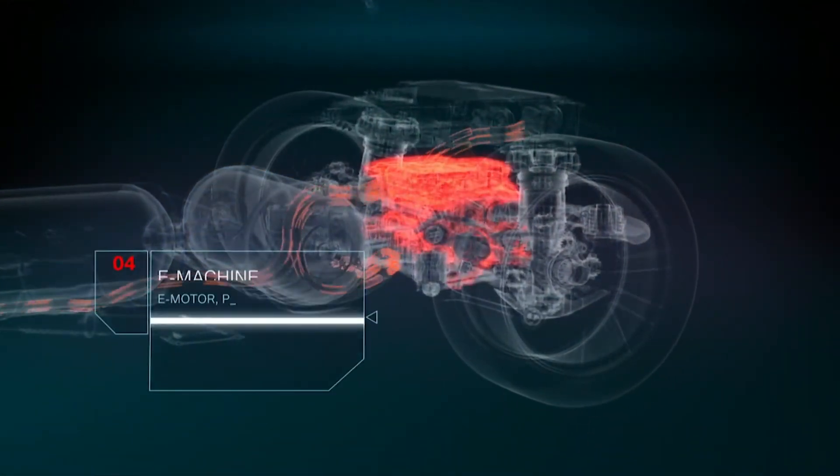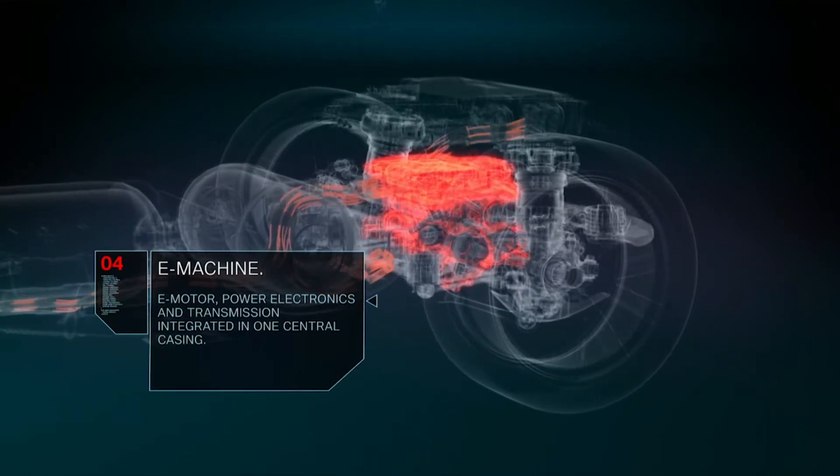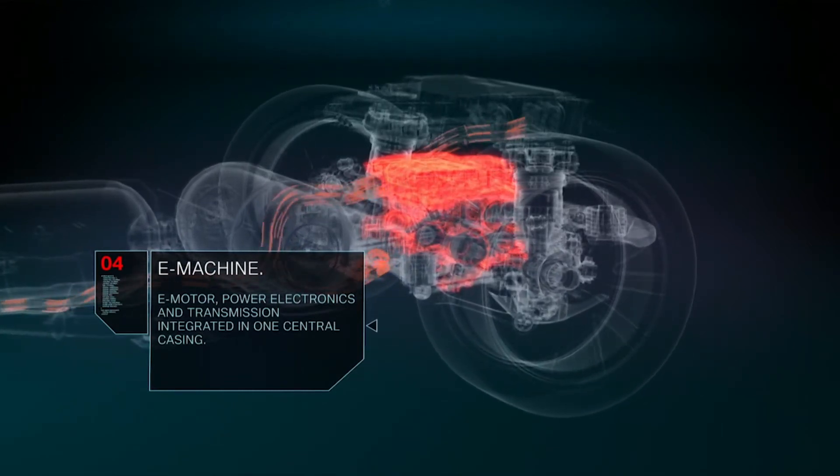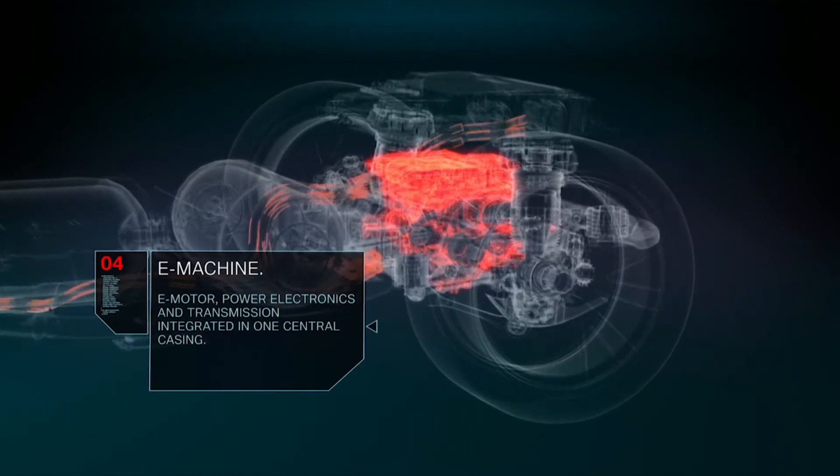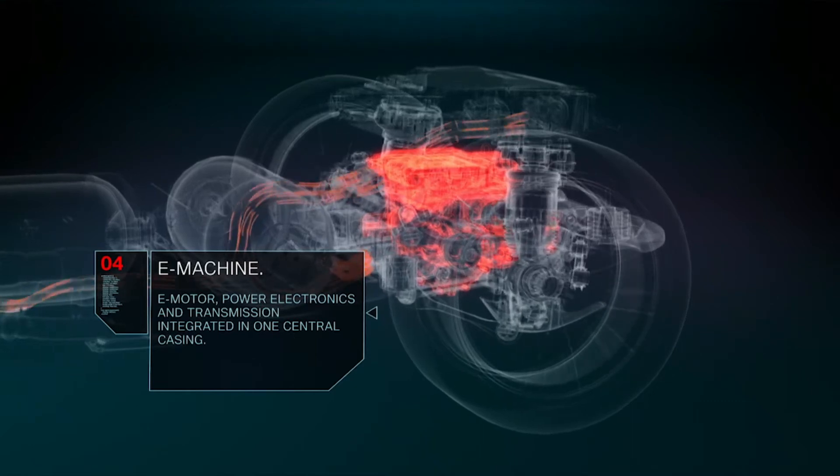The highly integrated eDrive unit consisting of electric motor, power electronics and transmission powers the rear axle. This eDrive unit will be the same 5th generation electric powertrain used in BMW's battery electric vehicles.